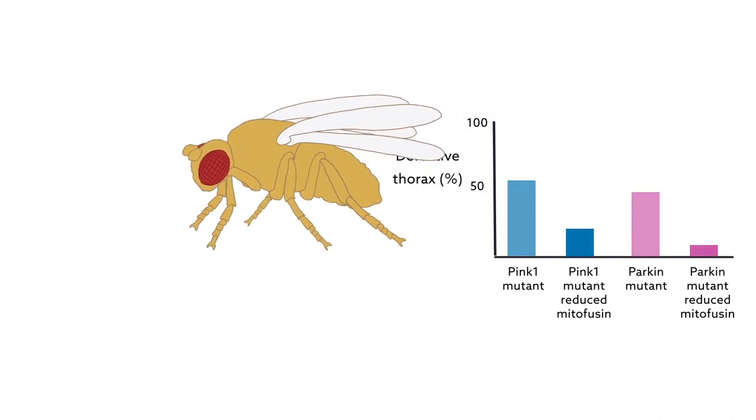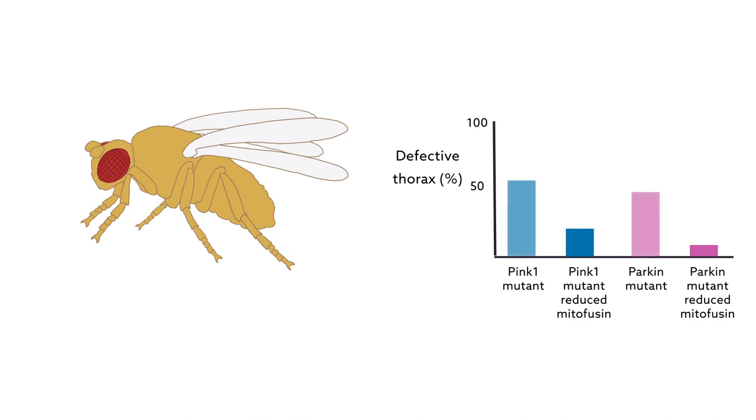It also kept the flies' muscles healthy, even though the mitochondria themselves were still defective.